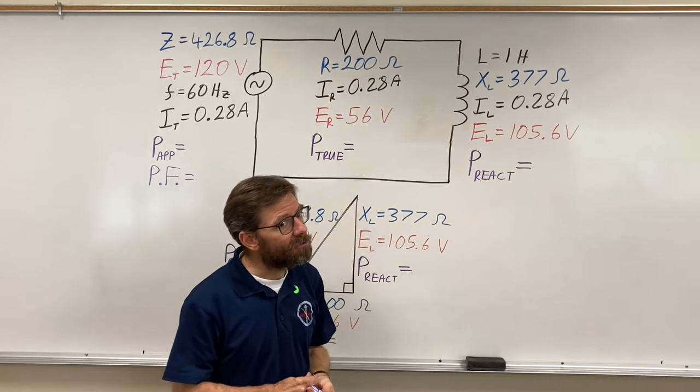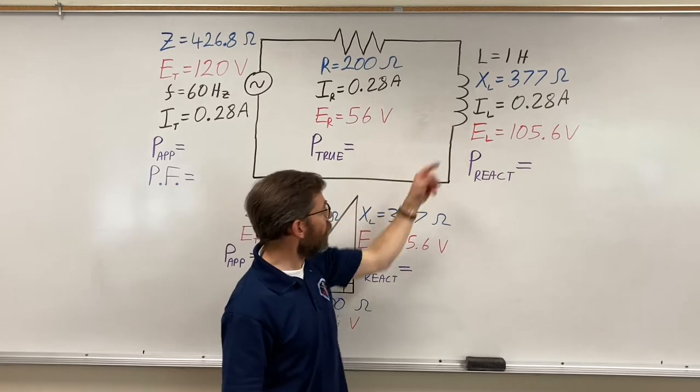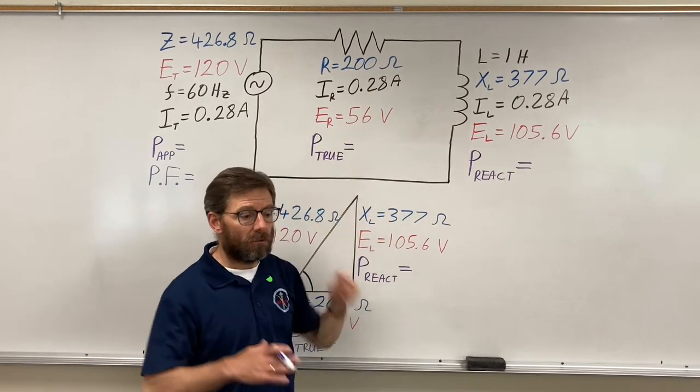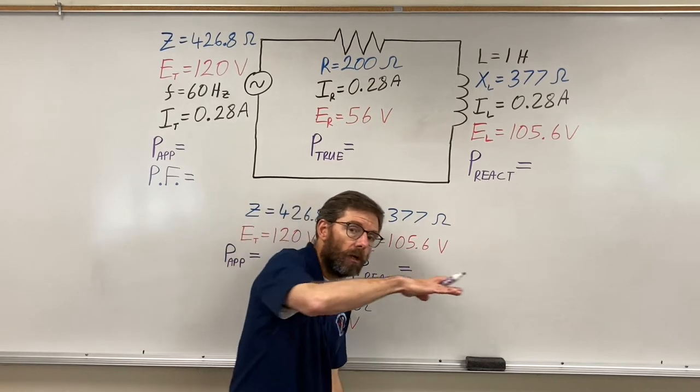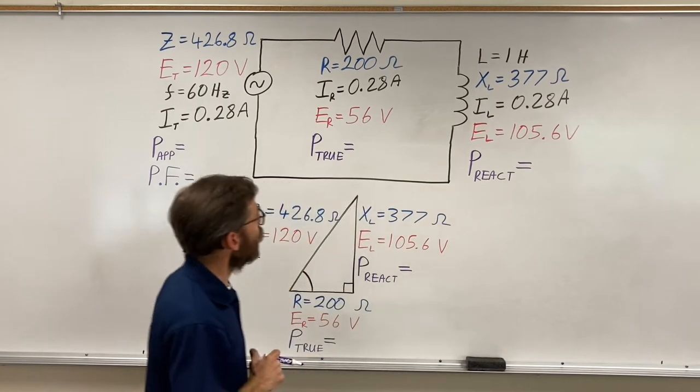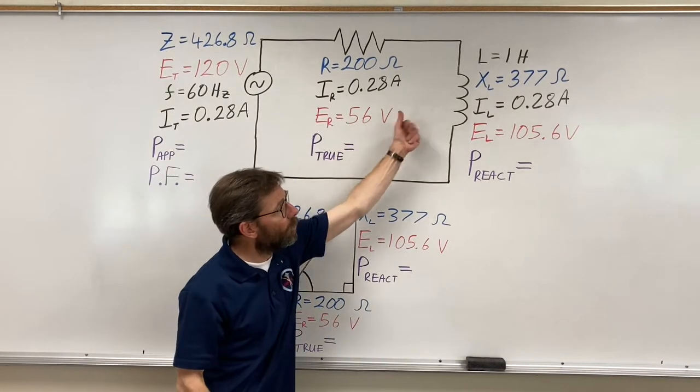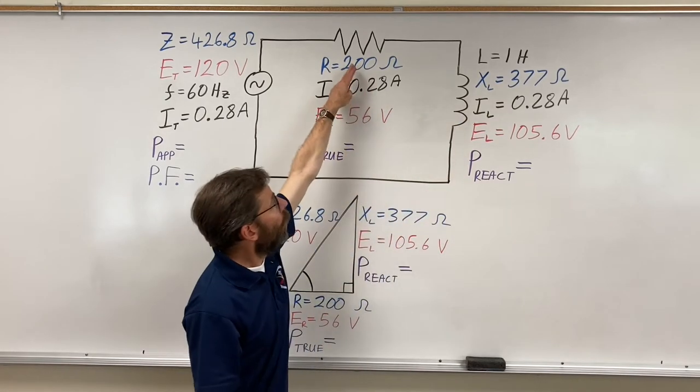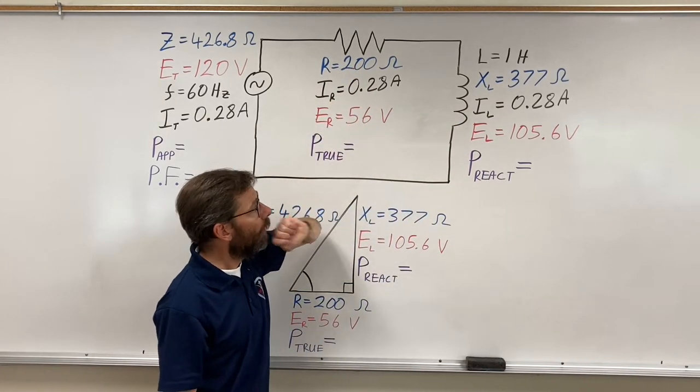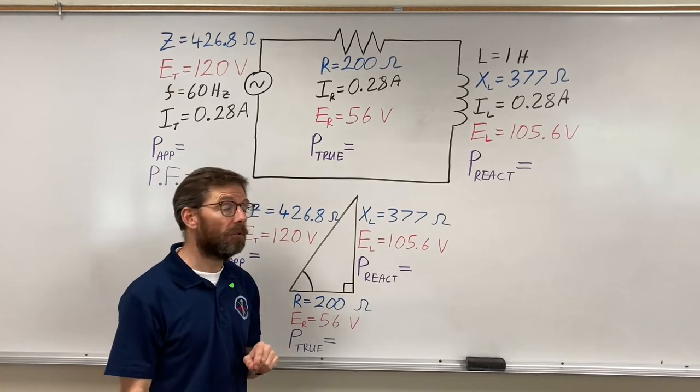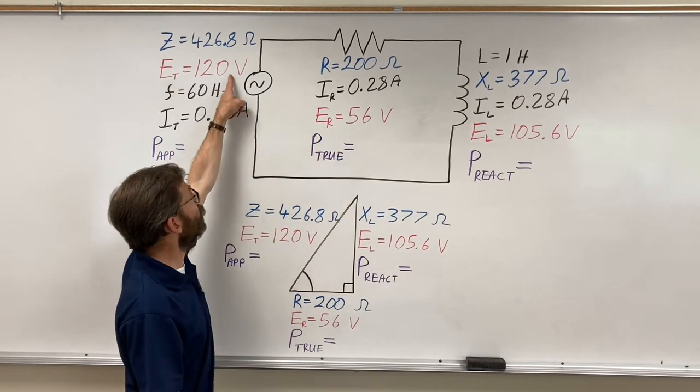Voltage isn't. You'll notice there's no triangle for current because it's the same. Current is all going on the horizontal line. Once we had our current, we could figure out voltage drop - ohms times amps is volts. We looked at 105 and 56 and said that's a problem, that's way more than 120.